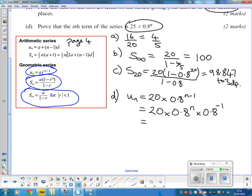Now, if you're multiplying terms, they can be in any order. So that's the same as 20 times 0.8 to the negative 1 times 0.8 to the N. And 20 times 0.8 to the negative 1 is 25 times 0.8 to the N. And that's what they were looking for.